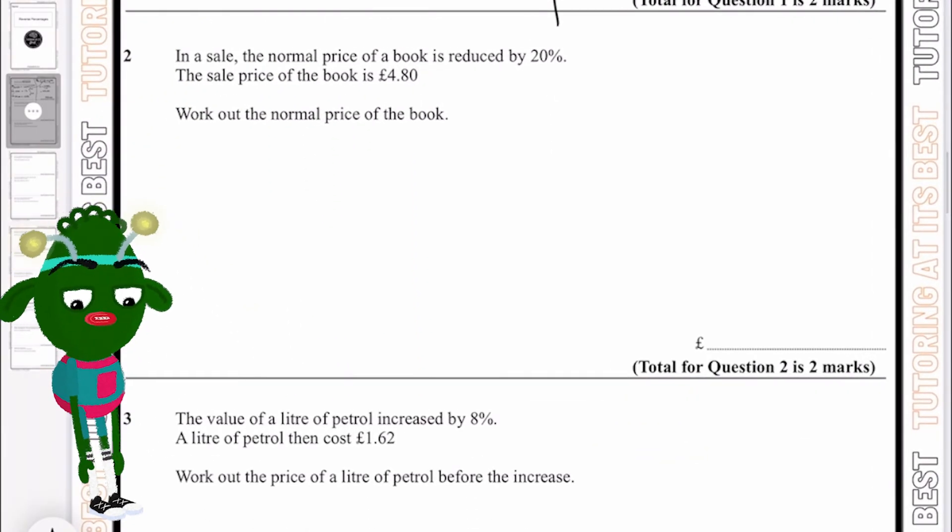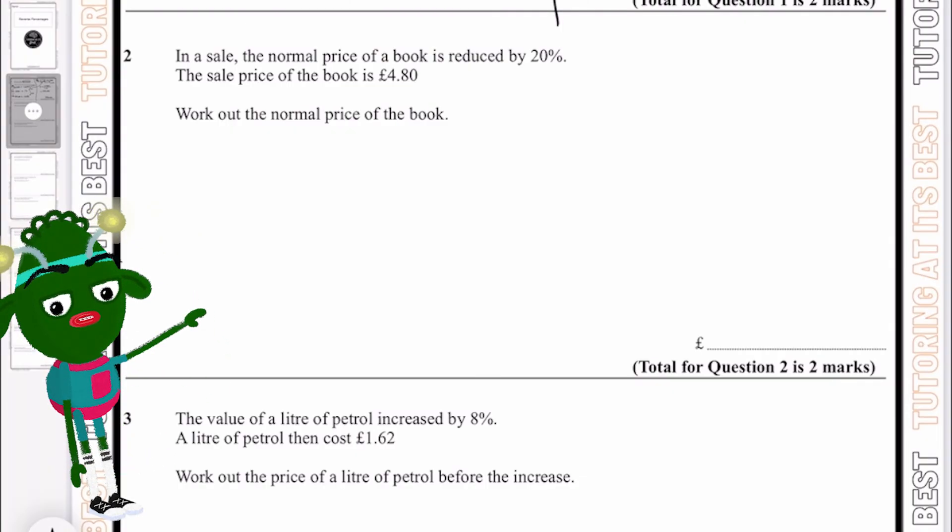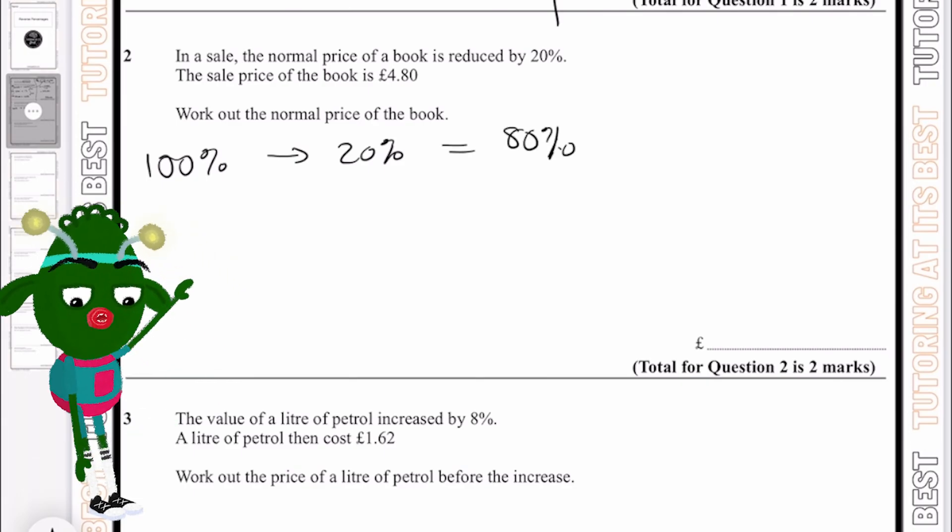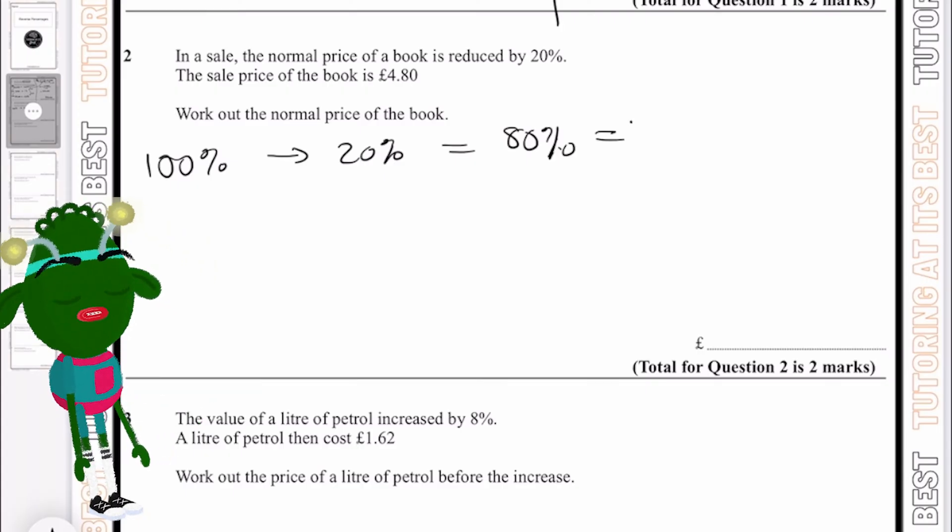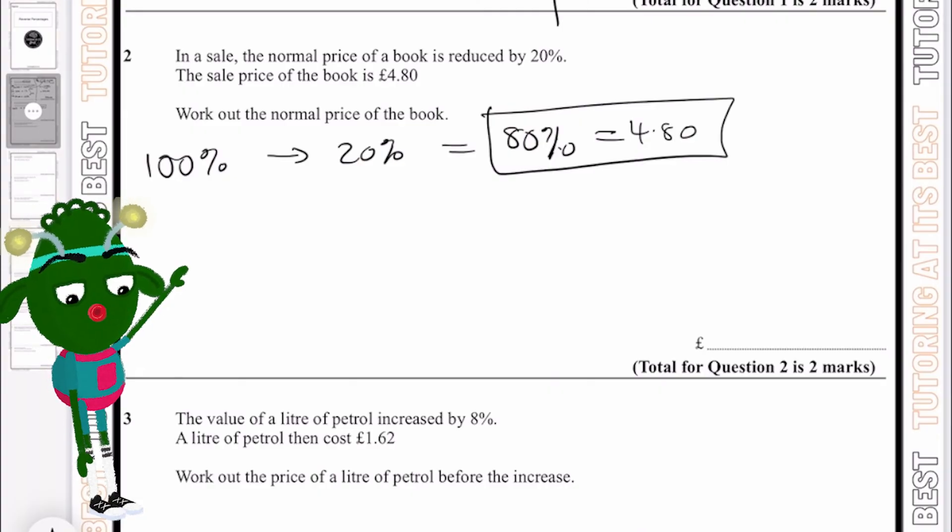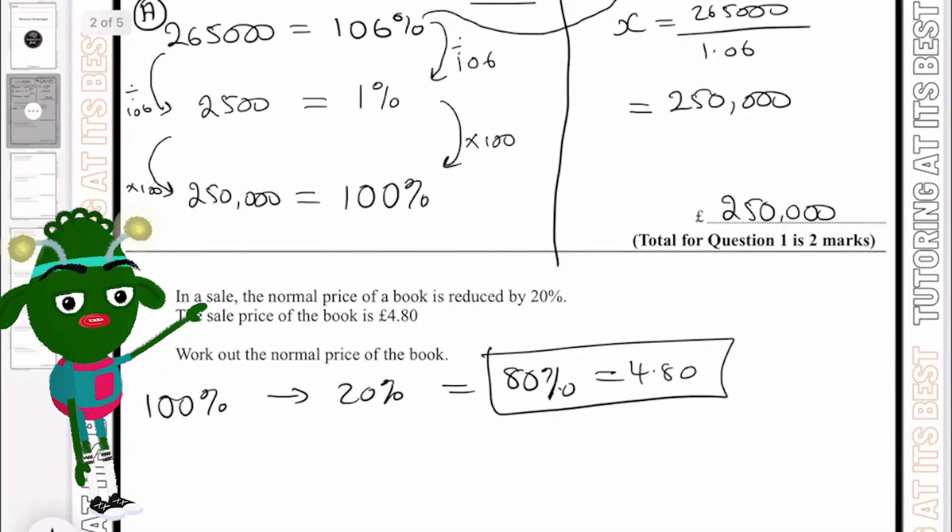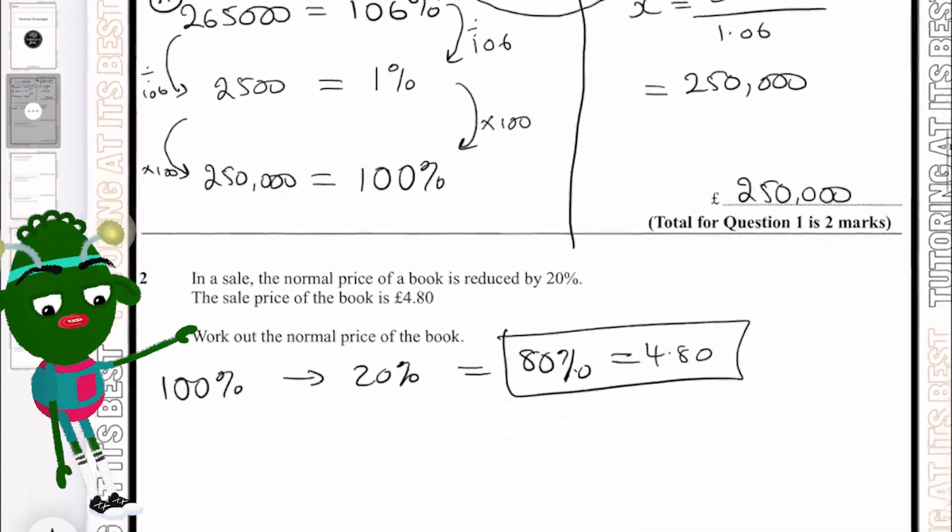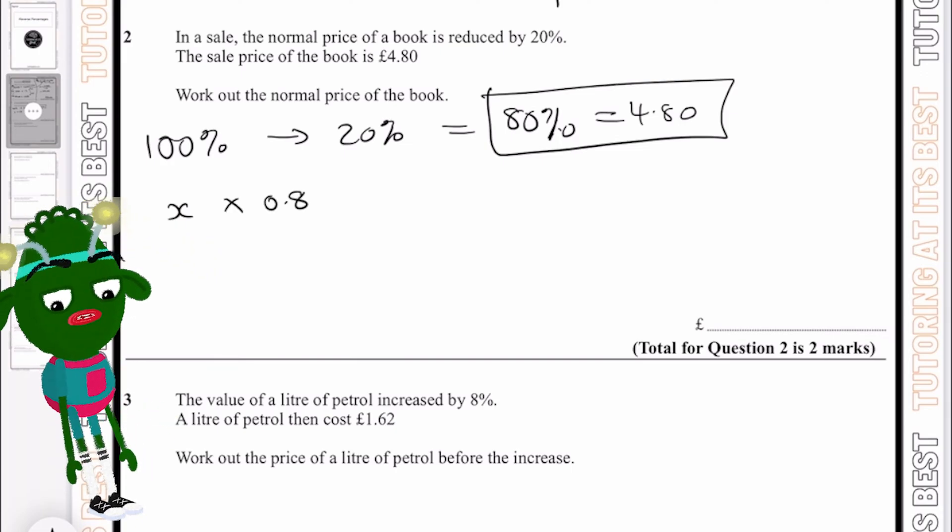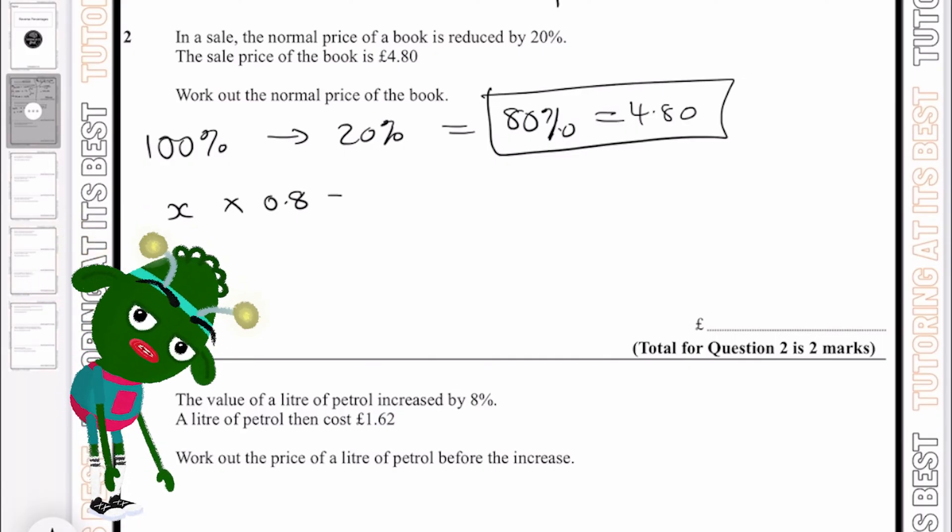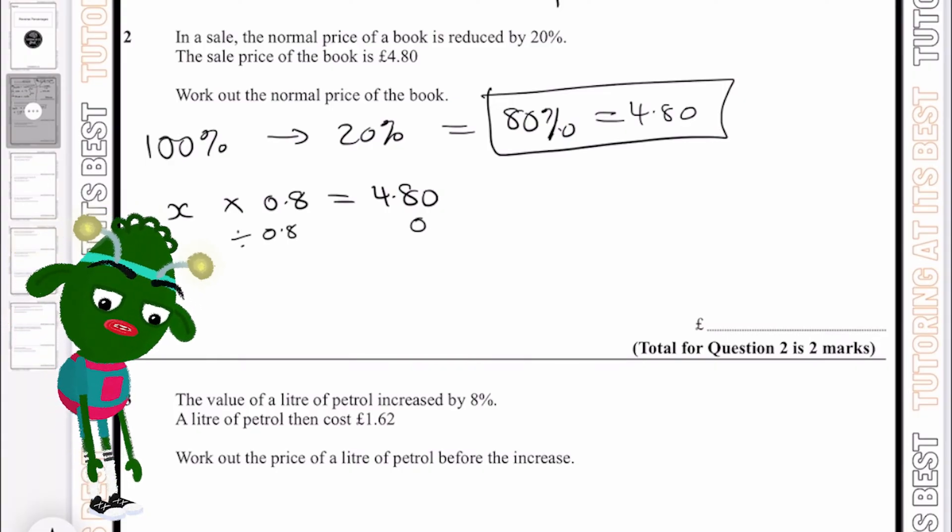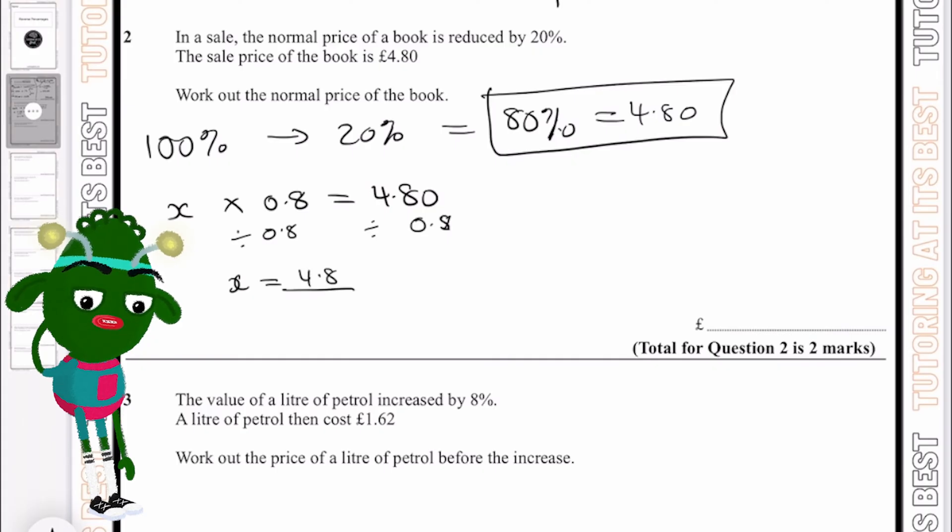Let's go for question number two. In a sale, the normal price of a book is reduced by 20%. So if it was 100, it's now reduced by 20 which gives us 80%. The sale price of the book is £4.80, so we now know 80% equals £4.80. We need to work out the normal price. I'm going to get my 100% value and multiply it by 0.8, which is the decimal conversion for 80%, and that would give me £4.80. Then I'm going to make x the subject, so divide both sides by 0.8.